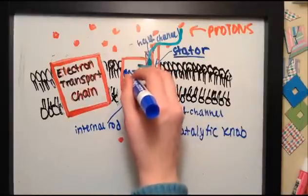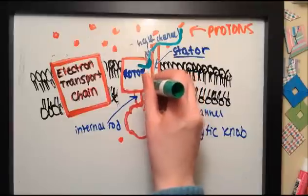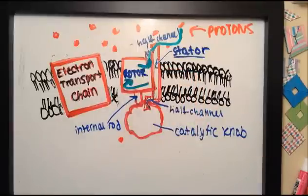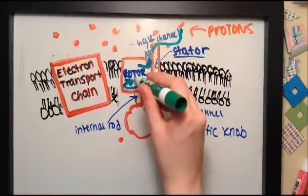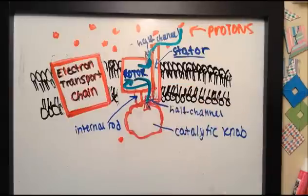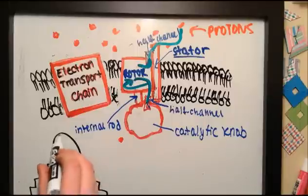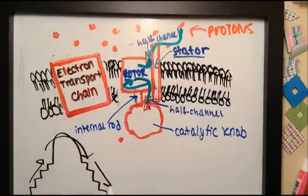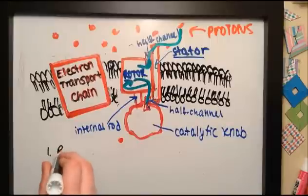The protons travel into the rotor, where they spin around. And eventually, they exit through one of the half channels. Think of these channels as the stairs to get on and off of a ferris wheel. You walk up, go around the wheel, and walk off a different set of stairs.